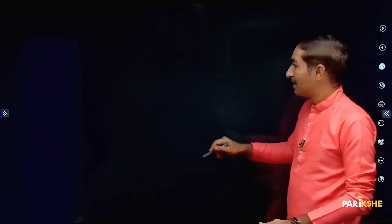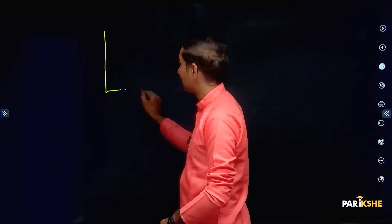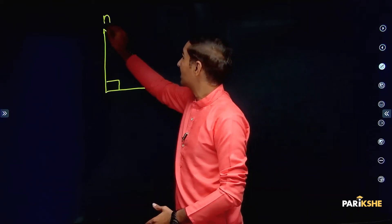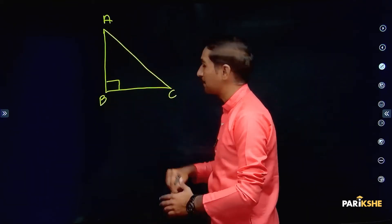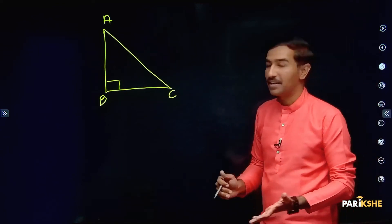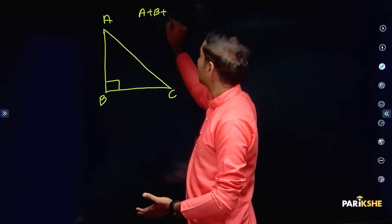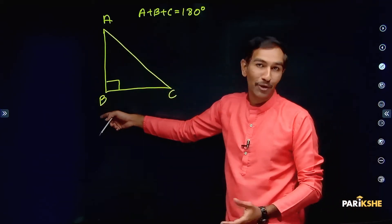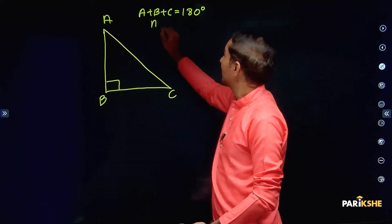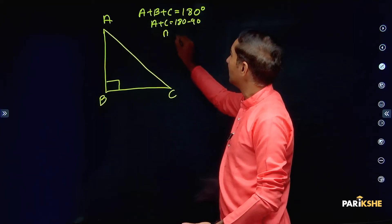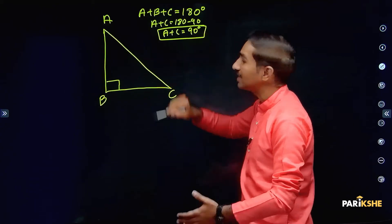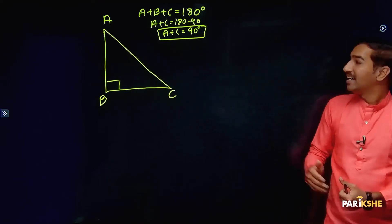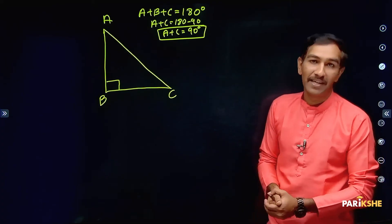Consider a right angle triangle. In this right angle triangle, angle B is 90 degrees. Therefore, A plus C is equal to 180 minus 90, which means A plus C is equal to 90 degrees.